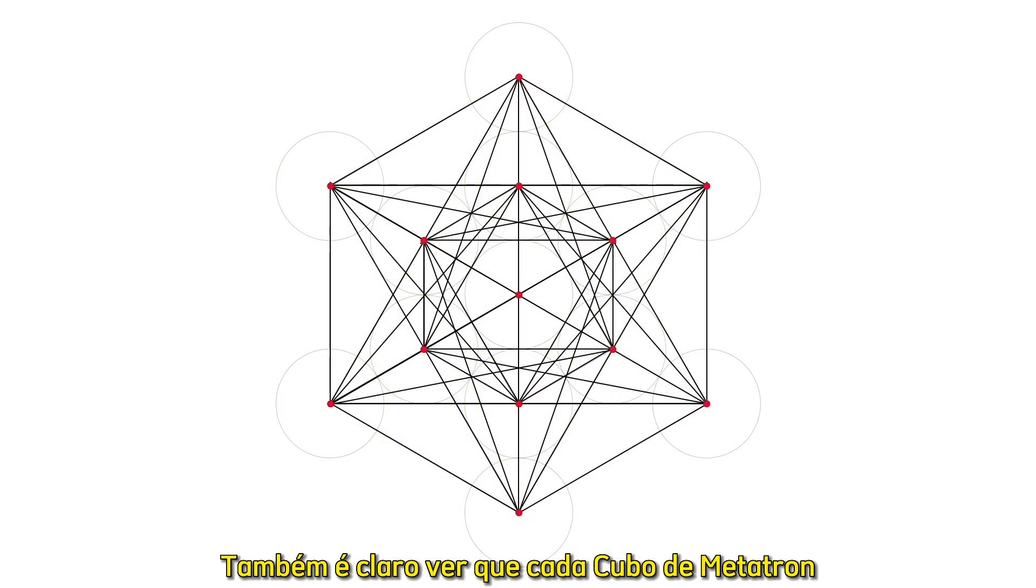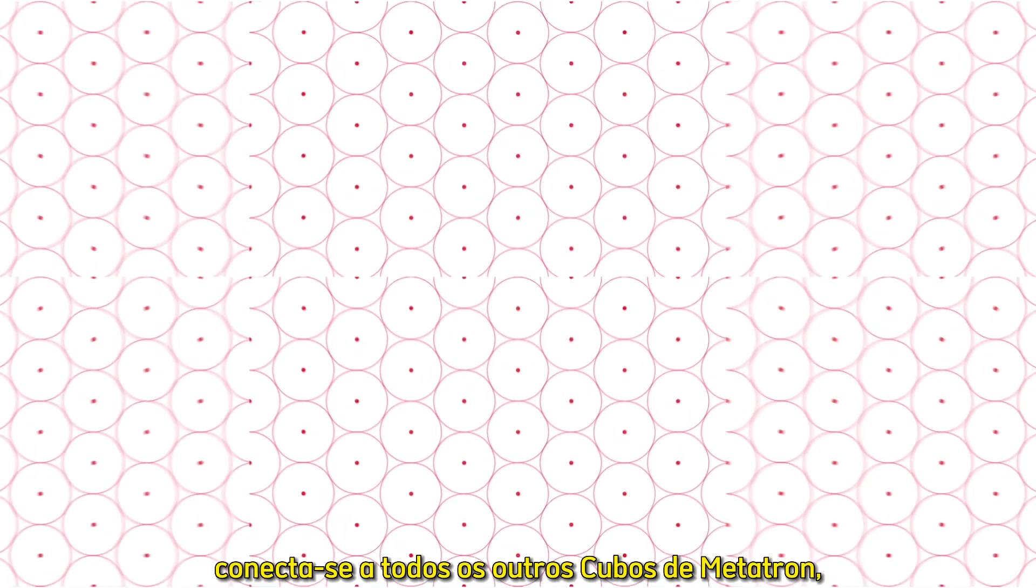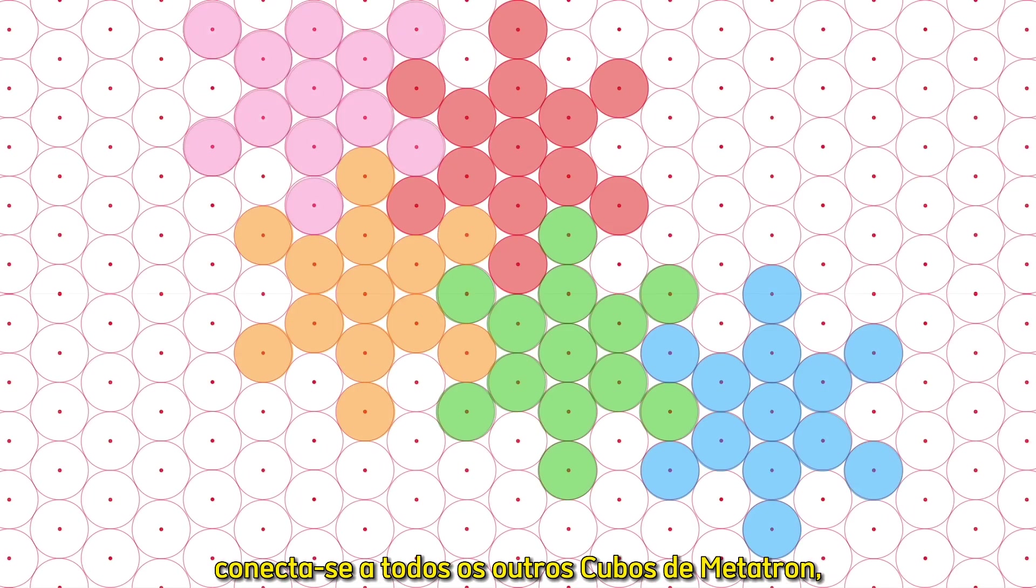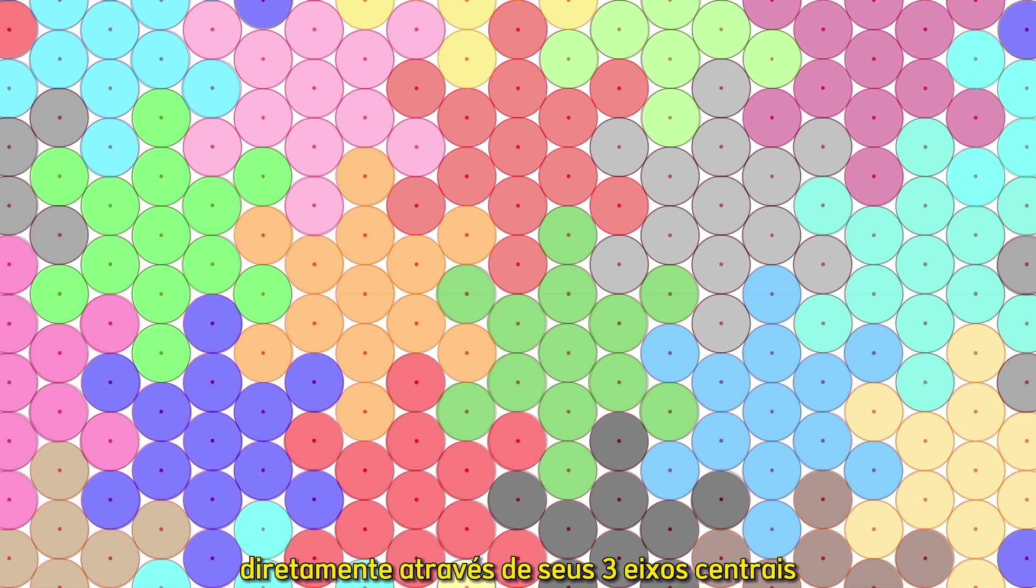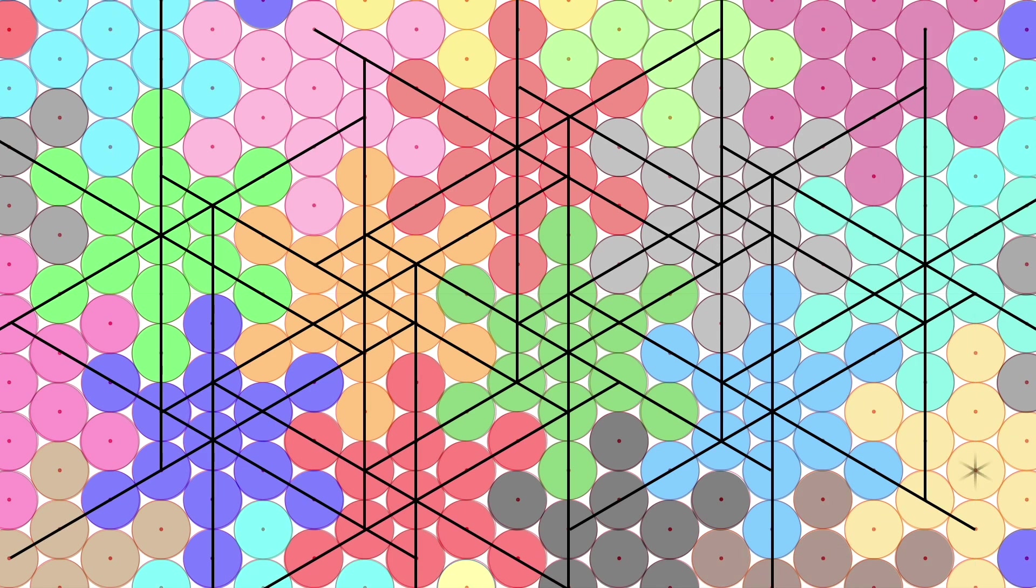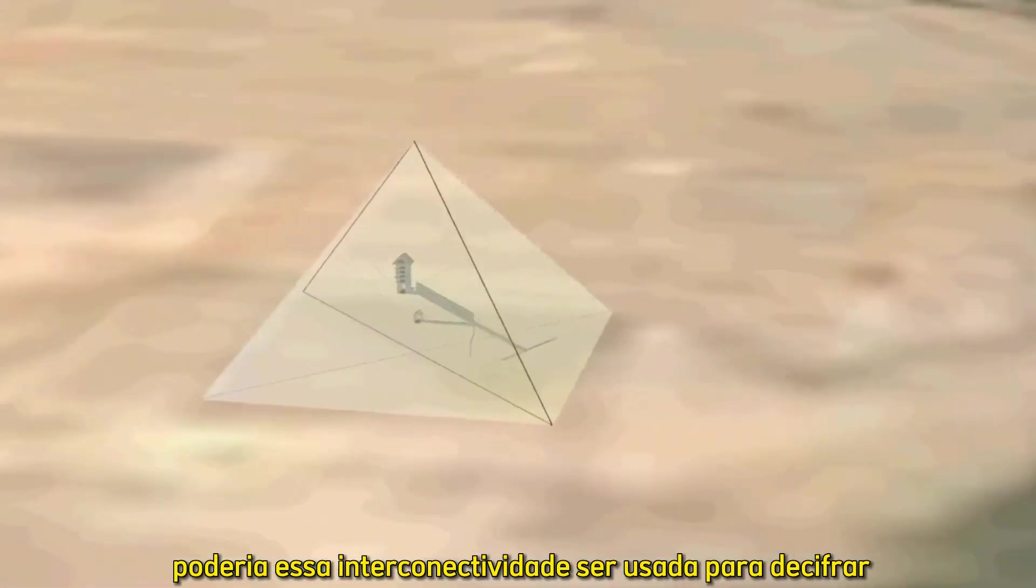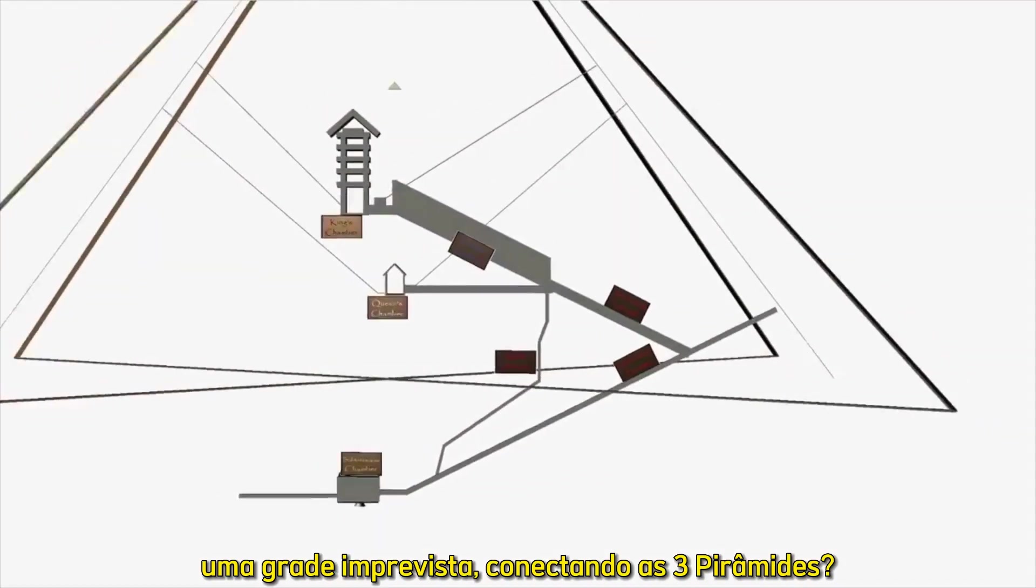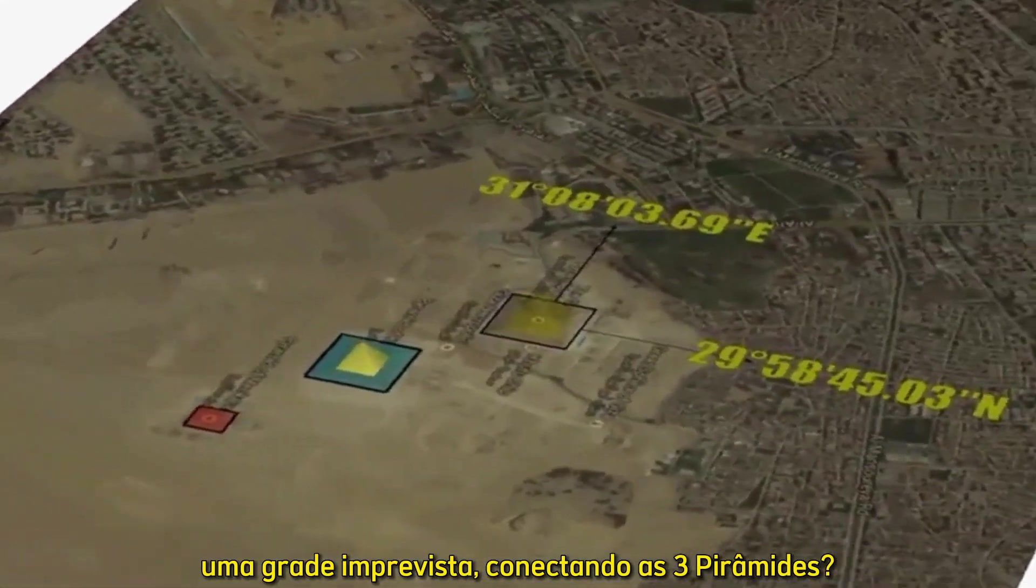It's also clear to see that every Metatron's cube connects to every other Metatron's cube directly through its three central axes in an infinitely repeating grid pattern. So, can this interconnectivity be used to decipher a previously unforeseen grid connecting the three pyramids?